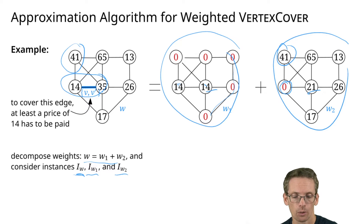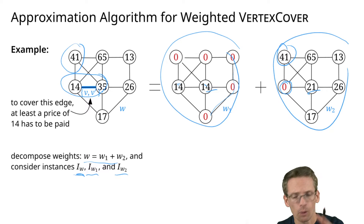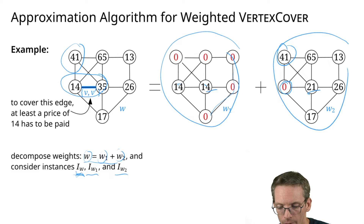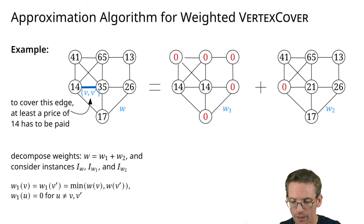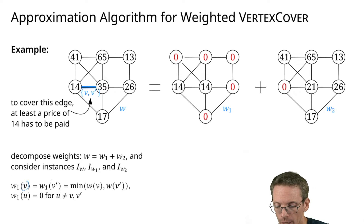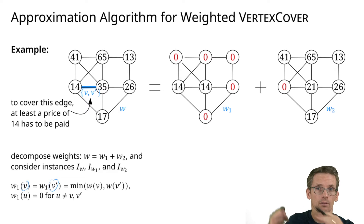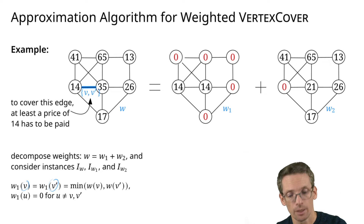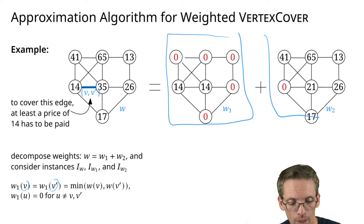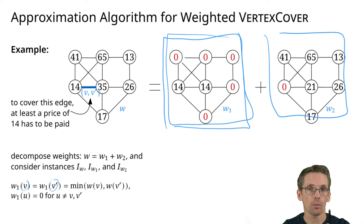We go from our instance with weight vector w to two instances with weights w1 and w2. We select an edge, and w1 of the endpoints equals the minimum of the two endpoint weights, with all other weights zero. Then w2 is simply w minus w1. The interesting observation is that for this first instance, any vertex cover has either weight 14 or 28.